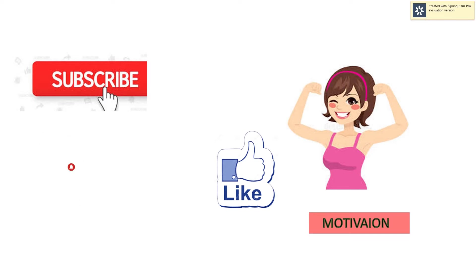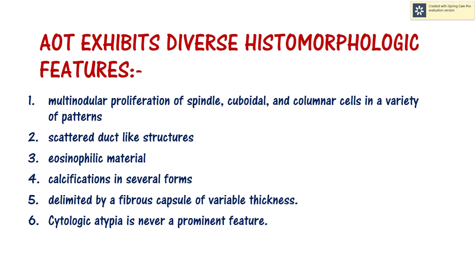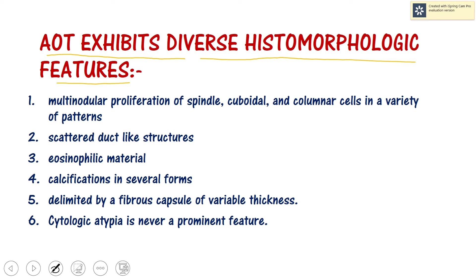Now coming to the histopathology of adenomatoid odontogenic tumor. AOT exhibits diverse histomorphologic features — many patterns are seen in AOT. The first point is multinodular proliferation of spindle, cuboidal, and columnar cells in a variety of patterns.